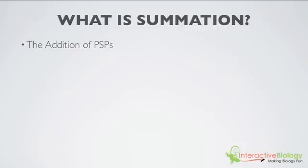Summation is basically the addition of post-synaptic potentials. To illustrate this I'm going to draw our membrane potential graph with membrane potential on the y-axis, E sub M, and time on the x-axis. And I'm going to start with our resting membrane potential somewhere around negative 70 millivolts. So let's say this is negative 70.